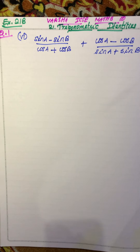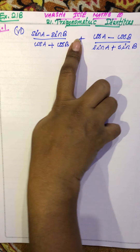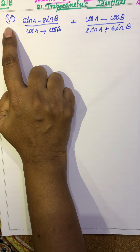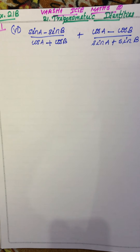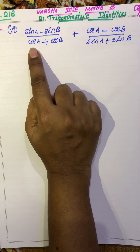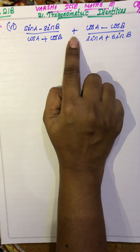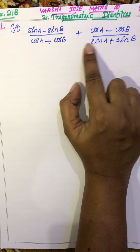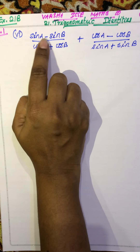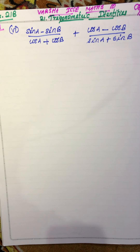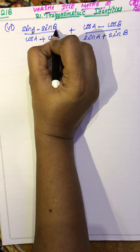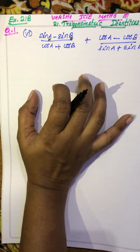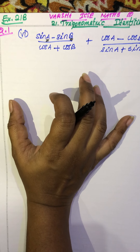Hi students, welcome. This is Versha. Max trigonometry identities, exercise 21B, question number 1, sixth subdivision. The question is: (sin A - sin B)/(cos A + cos B) + (cos A - cos B)/(sin A + sin B). The angle is important — angle A and angle B — so we should not confuse with that. Write the angles carefully.